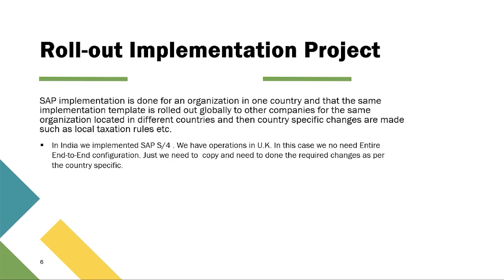Rollout implementation project: SAP implementation is done for an organization in one country, and the same implementation template is rolled out globally to other companies in the same organization located in different countries. Country-specific changes are then made, such as local taxation rules. For example, if SAP S4 is implemented in India and the organization also has operations in the UK, we don't need entire end-to-end configuration — we just copy the template and make the required country-specific changes.